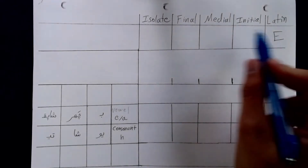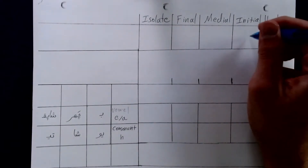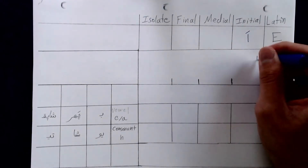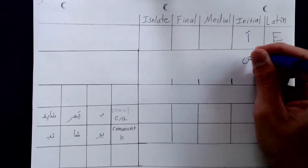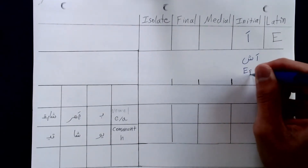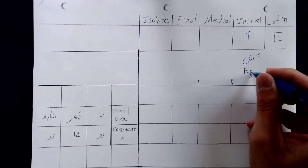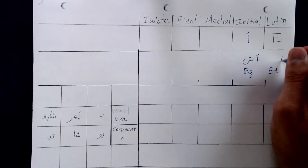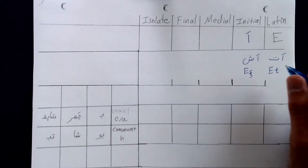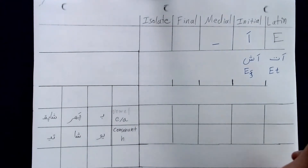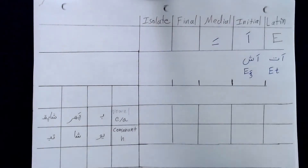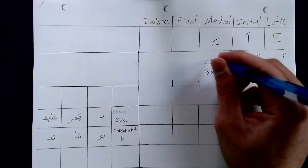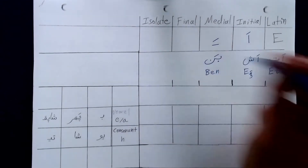Let's cover E. In the initial position, when we're using the Östün, we will actually write an Elif first, and then place the Östün on top. If we have the word It, we would simply represent it as such. In the medial position, we simply place the Östün on top of any letter. So if we have the word Ban, we would write it as Ban.